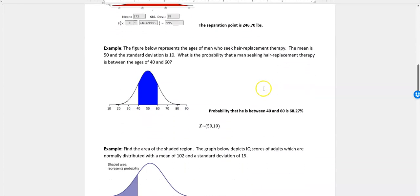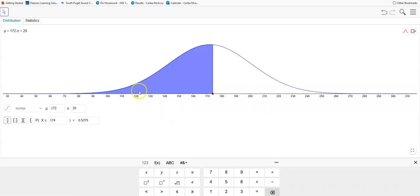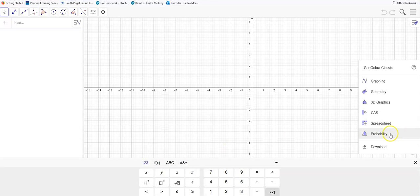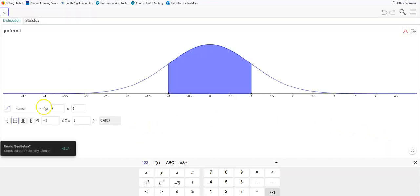We have a figure that represents the ages of men who seek hair replacement therapy. Mean is 50, and the standard deviation is 10. This is what our distribution looks like. What's the probability that a man seeking hair replacement therapy is between the ages of 40 and 60? We can do that on GeoGebra. Let me show you. I like to come into it fresh every time. Sometimes it can be a little glitchy for me.